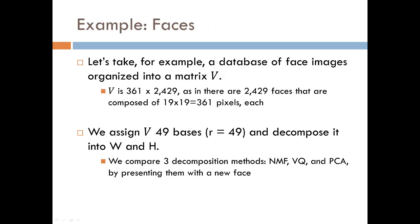So say we are given a database of images of faces. Each image is 19 by 19, meaning there are 361 pixels in each image, and we are given 2,429 pictures of faces. We organize this data set into a matrix V that is 361 by 2,429, so each column represents an image. We then assign V 49 bases and decompose it into W and H matrices.